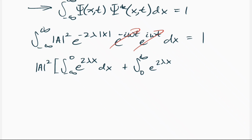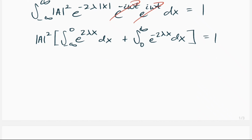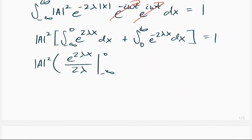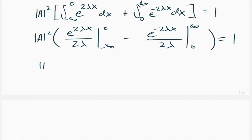From 0 to infinity, all x values are positive, but we still have that factor of negative 1, so the power is negative 2λx. So our two integrals are: A² times [integral from negative infinity to 0 of e^(2λx) dx plus integral from 0 to infinity of e^(−2λx) dx] equals 1.